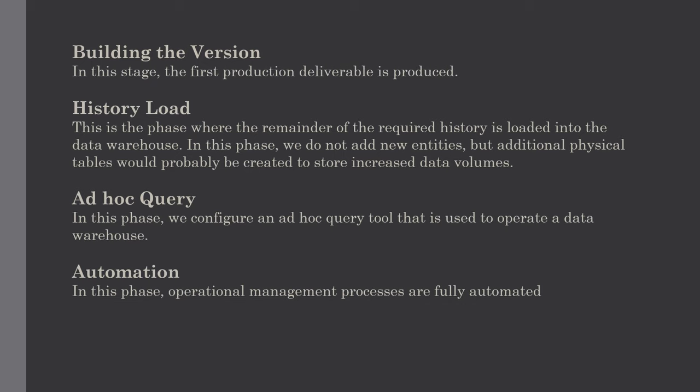The next phase is history load. This is where the remainder of the required history is loaded into the data warehouse. In this phase we do not add new entities, but additional physical tables would probably be created to store increased data volumes. For example, suppose the build version phase delivered a retail sales analysis data warehouse with two months of history — this allows users to analyze only recent trends. To also identify annual and seasonal trends, the last two years of sales history could be loaded from the archive. The backup and recovery procedure may become complex, so it is highly recommended to perform this activity in a separate phase.